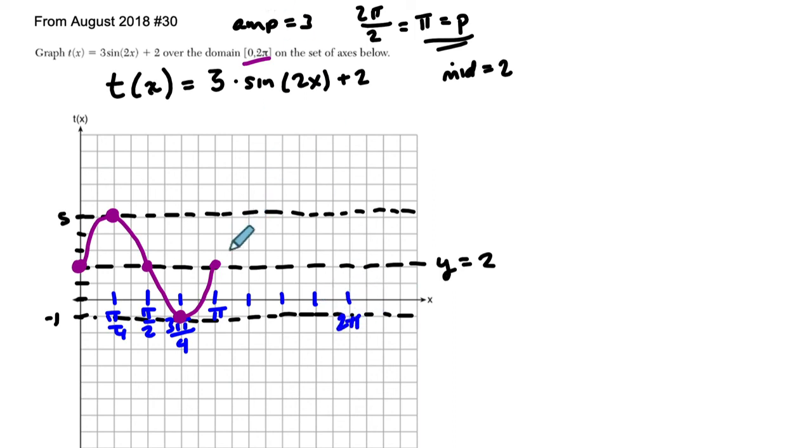And then I'm just doing the same thing. I'm going to go up to a maximum, down to the midline, back to the outside down to the bottom of the graph, and then back up to the midline. So you're going to get essentially 2 cycles of this wave. And that's it. So I hope that helped.